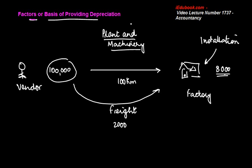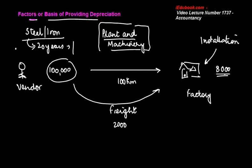You expect that although this plant and machinery, because it is made of steel or iron, will remain for 20 years, you cannot use it for the entire period. The legal life of this plant and machinery is 20 years, but you can use it only for 10 years. After 10 years, because it's a physical asset, you can sell it off for 10,000.